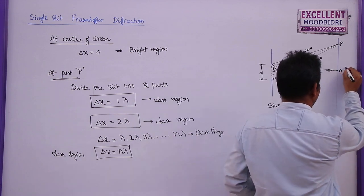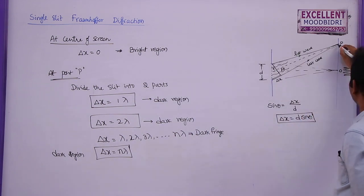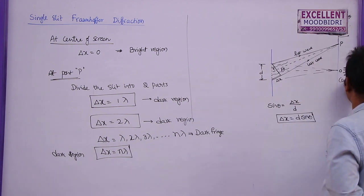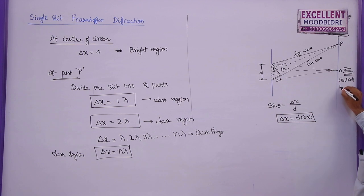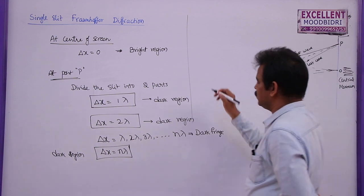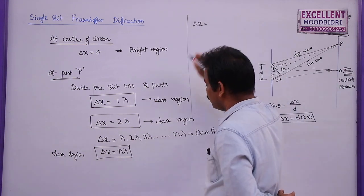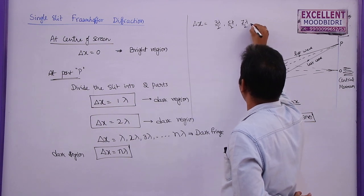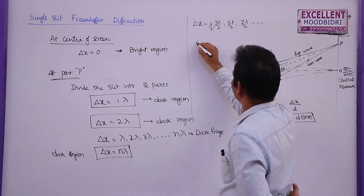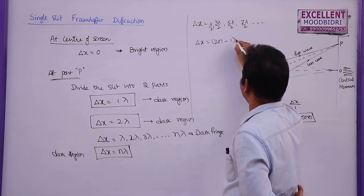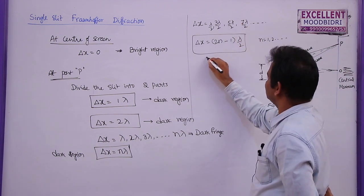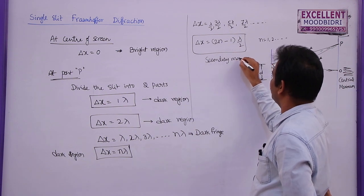For the central maximum, the bright region formed at the center of the screen is called central maximum. Between two consecutive dark fringes, we get secondary maxima. If delta x is between λ and 2λ, we can write this as 3λ/2, 5λ/2, 7λ/2, and so on, including λ/2. So if delta x = (2n − 1)λ/2, where n = 1, 2, 3..., you get secondary maxima.